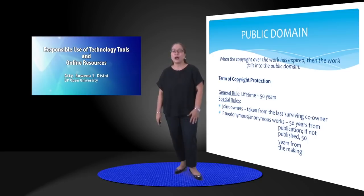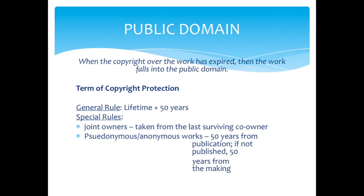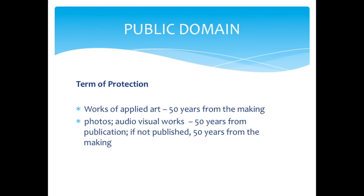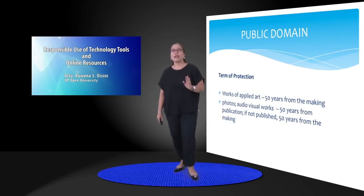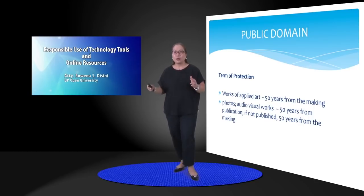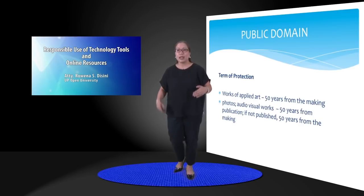There are special rules regarding expiration of copyright. When you are joint owners, the lifetime plus 50 years is taken from the last surviving co-owner. When the work is anonymous, the 50 years is taken from publication if it's published; if not published, the 50 years is computed from its making. If it's work of applied art, the 50 years is computed from the making. If it's photos or audiovisual works, the 50 years is computed from publication, but if not published, then 50 years from its making. Public domain is what OER always emphasizes — 'open' indicates that you're free to use it because the copyright has already expired.